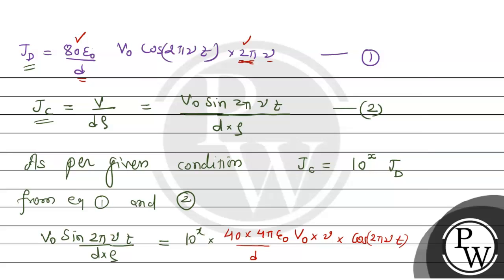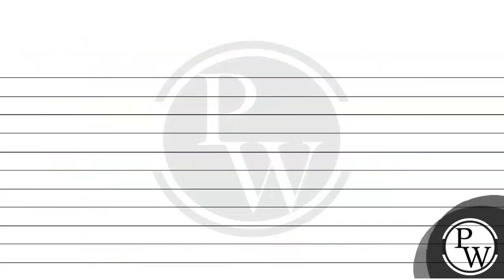Yahan se yeh wala d aur yeh wala d yeh to cancelled ho jaega. Ab tan 2 pi nu ko hum tan 2 pi nu upon 800 mein convert ho jaega. So that is tan 2 pi nu. Ab nu ka value kitna given hai? 900 given. So 900 upon 800 hai.